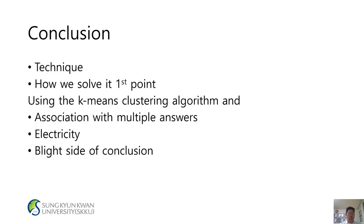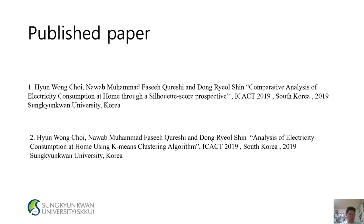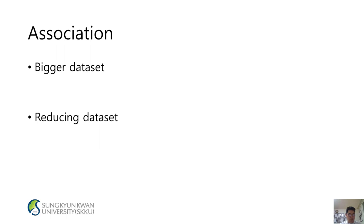Conclusion: K=7 is the optimal result from the K-means algorithm. The Silhouette score is 0.799 (optimal), and the Calinski-Harabasz index result is 560.3999 (optimal). The technique uses K-means clustering with multiple association answers for electricity optimization. Published papers include a comparative analysis of electricity consumption at home through Silhouette score perspective, and analysis using K-means clustering algorithm, both presented at ICCT 2019, South Korea.